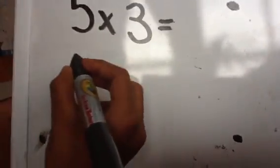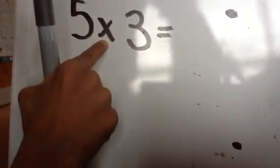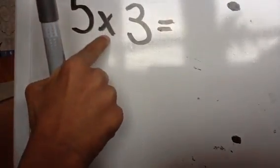To figure out the answer for 5 times 3, first you should look at 5 and 3. You know this is a multiplication problem because it has a times symbol there.